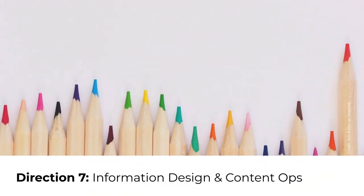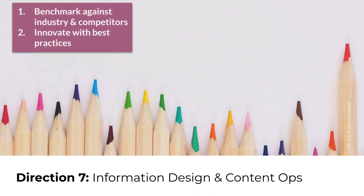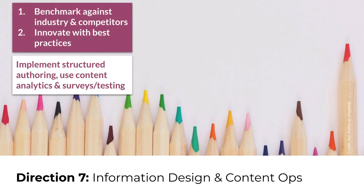The seventh direction for a content strategy, based on content ops maturity level, is called information design. This characteristic focuses on the level at which an organization makes content professionals responsible for the design of everything about the content experience. For organizations with lower maturity levels, strategy should focus first on establishing best practices by, for instance, benchmarking content ops against industry standards or against competitors. For organizations with higher maturity levels, strategy might involve implementing tactics or best practices like structured authoring and content reuse.